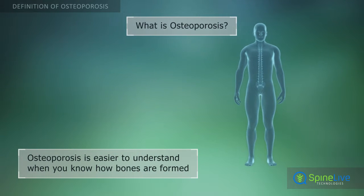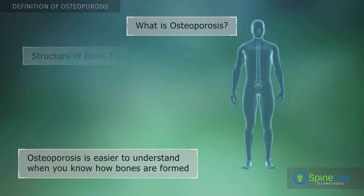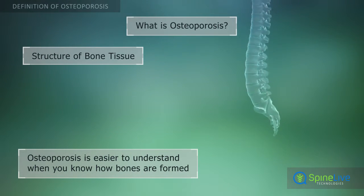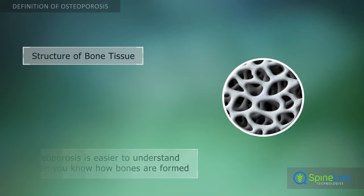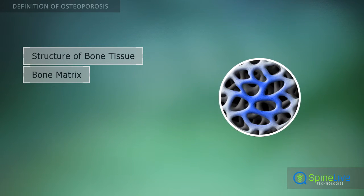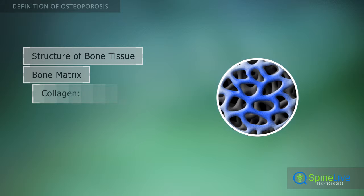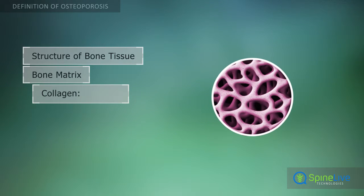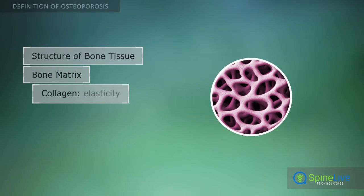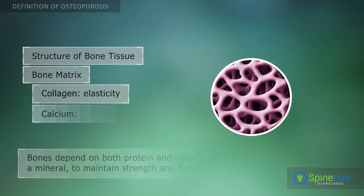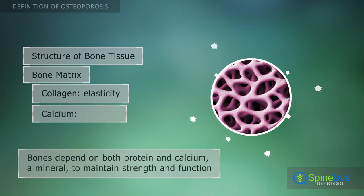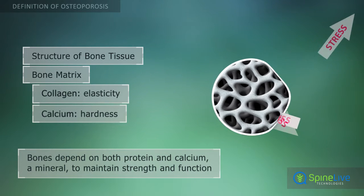How osteoporosis comes about is easier to understand when you realize how bone tissue is formed. Like other connective tissues, bone tissue contains a protein named collagen, which provides structural integrity and elasticity of the entire bone. The other major component is calcium mineral, which provides strength and resistance.